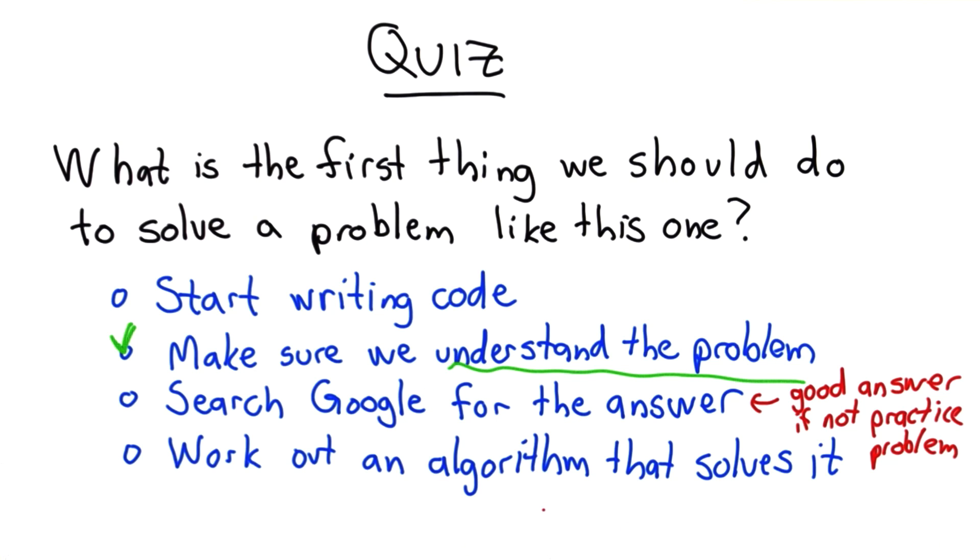The fourth choice to start working on an algorithm also depends on understanding the problem. Until we understand the problem well, we don't know what algorithm we need to create.